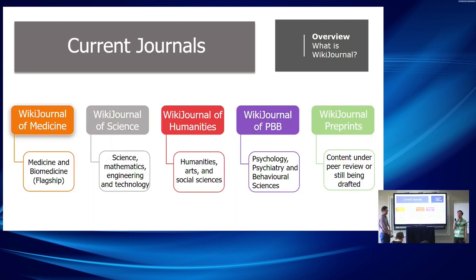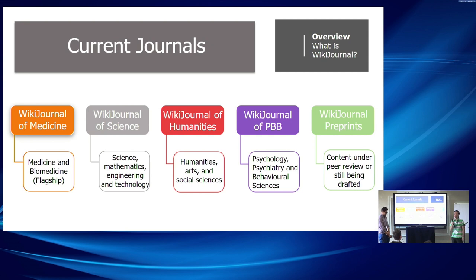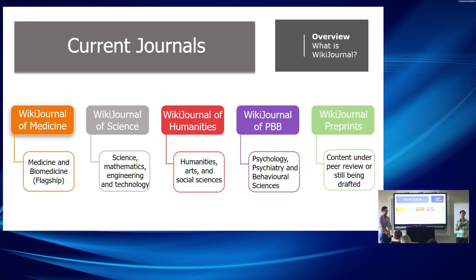Currently we have WikiJournal of Medicine, Science, and Humanities. We're about to launch WikiJournal of Psychology, Psychiatry, and Behavioral Sciences, hopefully by the end of this year. We also have a preprint. These journals are broad in scope — pretty much a very broad range, similar to PLOS ONE. They're typically called mega journals because they publish a wide variety of topics, just like Nature or Science, covering all kinds of different topics rather than focusing on just one niche like proteins or cell biology.